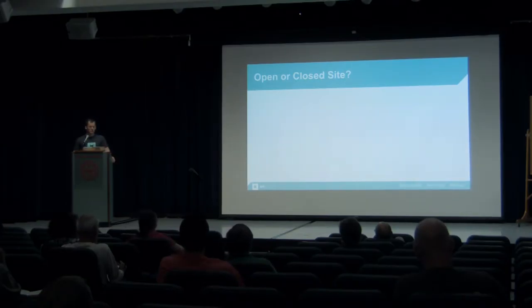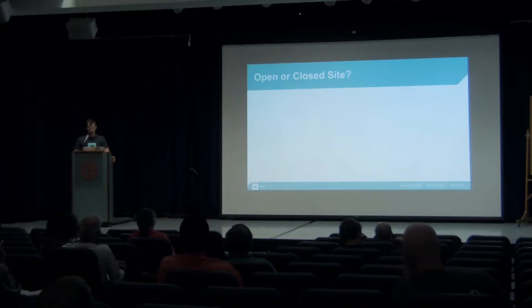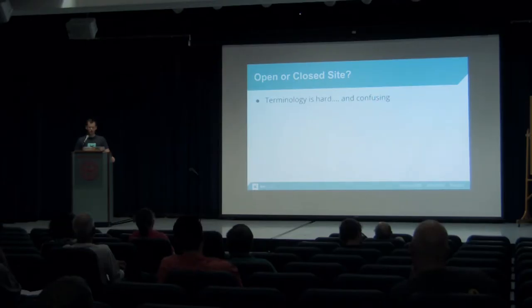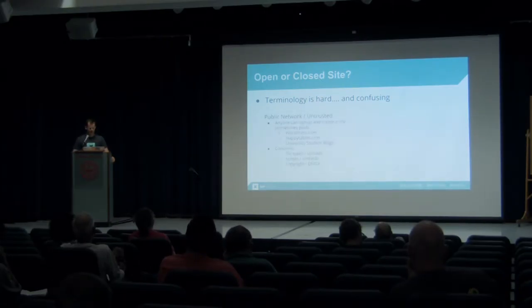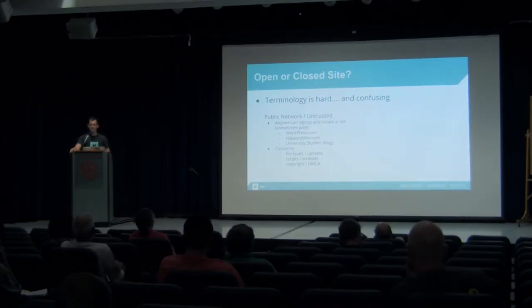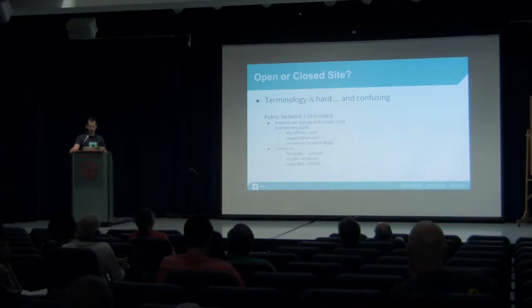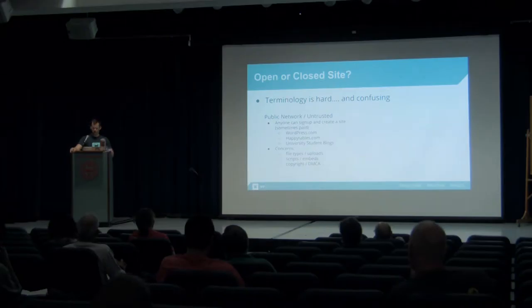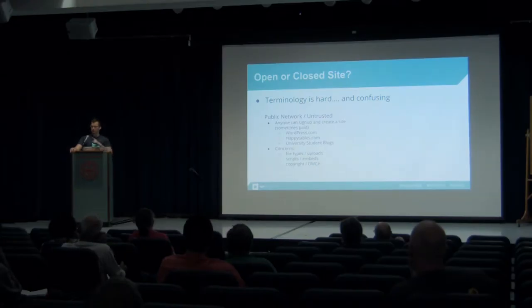When you've decided that multisite is what you want to do, there are a couple of other questions you have to ask to determine what kind of multisite you're building. The first is open or closed site. Terminology is hard and confusing. The first kind is a public network, also called an untrusted network — this is where anyone can come and sign up for a website, sometimes paying money for it. A great example is WordPress.com, which is a gigantic multisite network — 95 million sites, which we'll talk about in a couple of minutes.